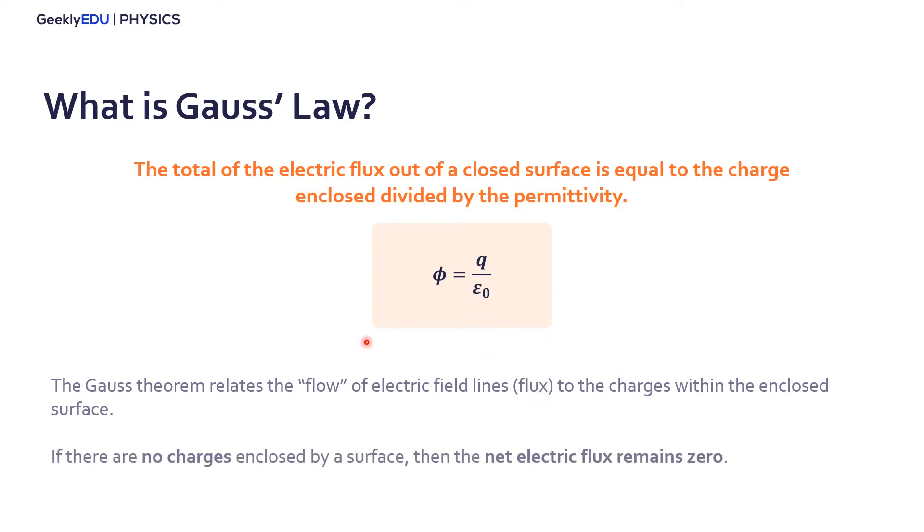Also, another thing that we can get from the Gauss theorem is that if there are no charges in an enclosed surface, then the net electric flux remains zero. Easy, if the charge here is zero, then the flux is also zero.